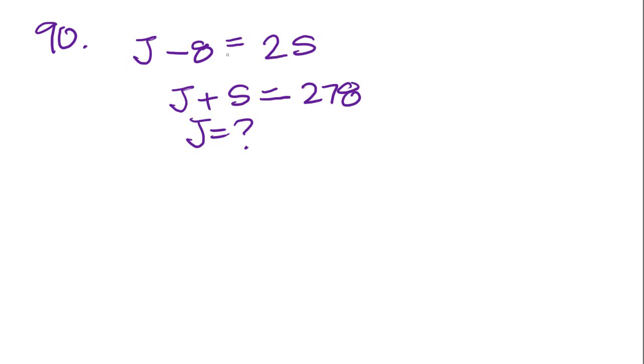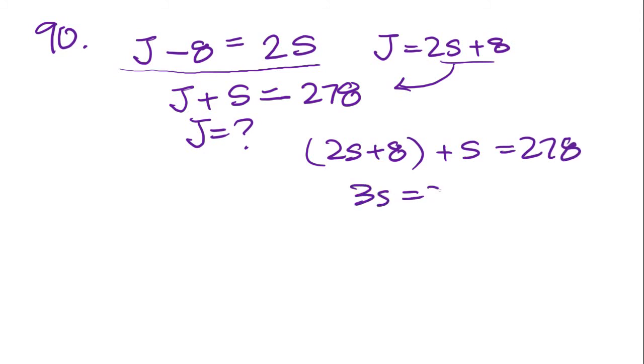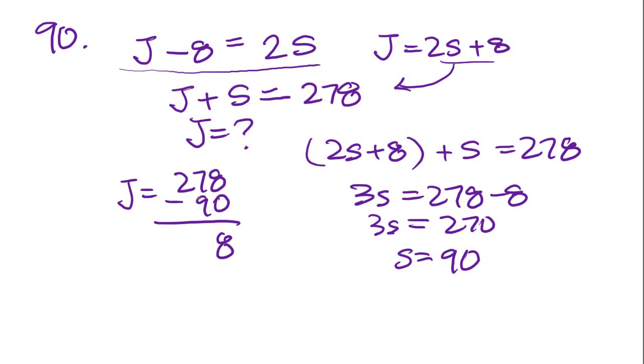The trick will be whether we want to find j first or s first. So j equals 2s plus 8. Plug that into this equation and you get 2s plus 8 plus s equals 278. Add the two s's, you get 3s equals 278 minus 8, which is 270. s equals 90. So we know his sister is 90 and Jake must equal 278 minus 90. And Jake weighs 188 pounds. That is answer choice E.